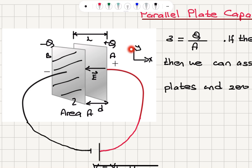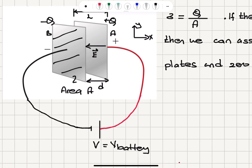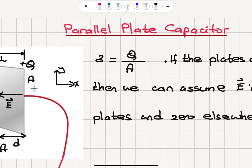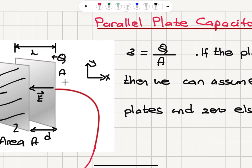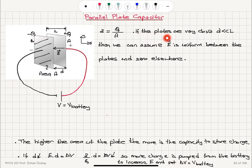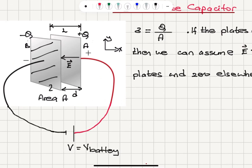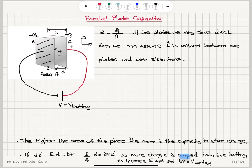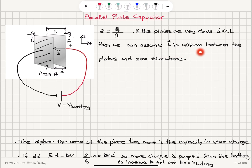My coordinate system is such that when I go from b to a, x is increasing. This is connected to a battery which basically charged these two conductors. The charge density sigma is once again the charge q divided by the area a of this conductor. If the plates are very close — meaning the distance between the plates is much less than the length of the plates — then we can assume the electric field is uniform between the plates and zero elsewhere.